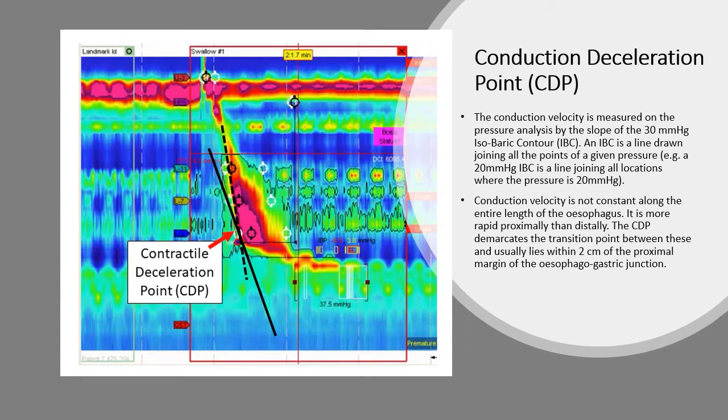Conduction velocity is not constant along the entire length of the esophagus. It is more rapid proximally than distally. The contractile deceleration point demarcates the transition between these and usually lies within 2 cm of the proximal margin of the esophagogastric junction.